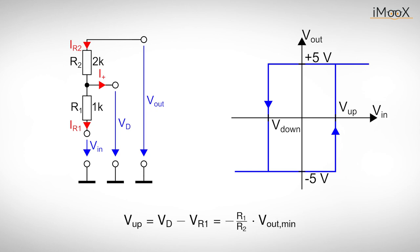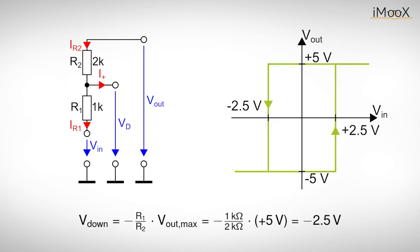If we use the numbers from the example, we get the following results for the trigger level. We proceed similarly for the second trigger level, but this time we start with an output voltage of plus 5 volts. This means we can plot the transfer function of our circuit.